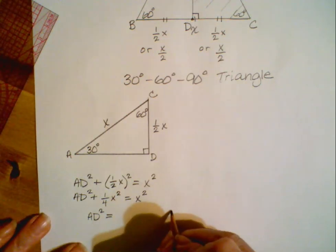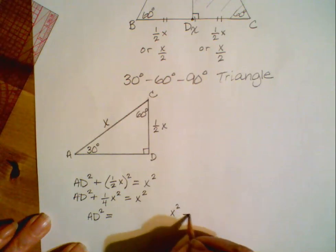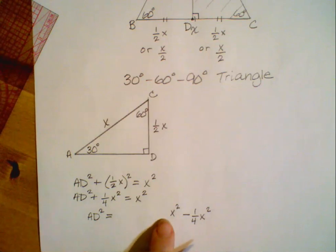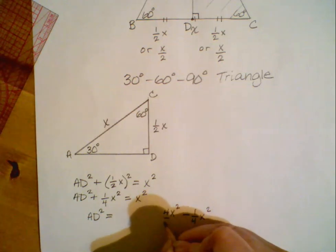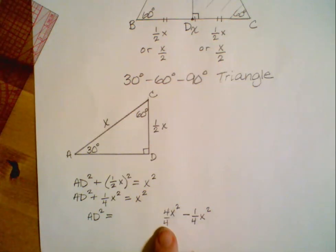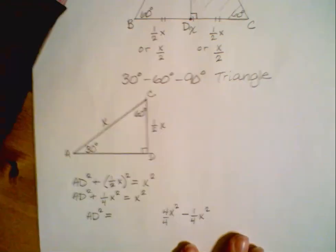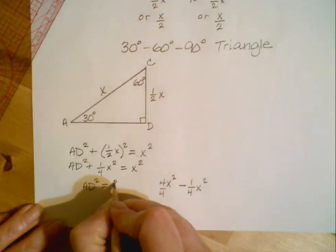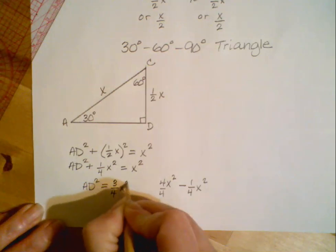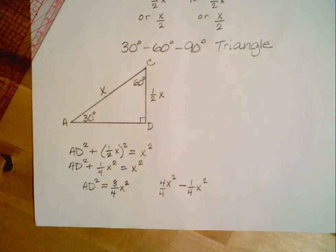Now, let's consider what happens here. If I take x squared and I subtract 1 fourth x squared, remember there's an understood coefficient of 1 here. And that 1, I want to think of as being 4 fourths. So when I take 4 fourths x squared and subtract 1 fourth x squared, it produces 3 fourths x squared.